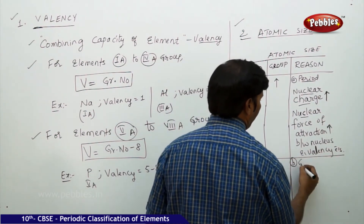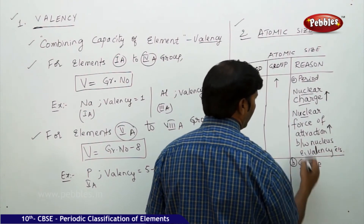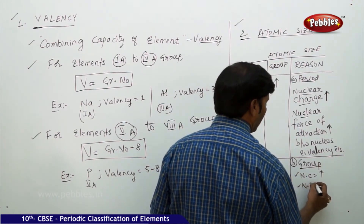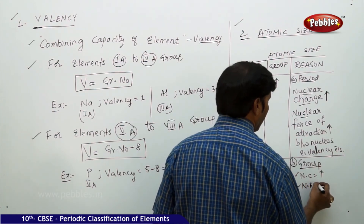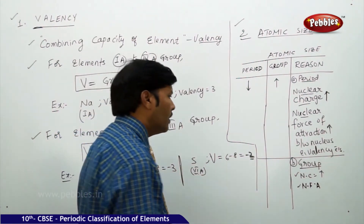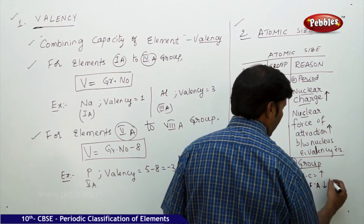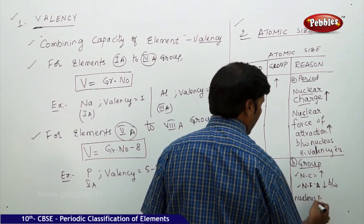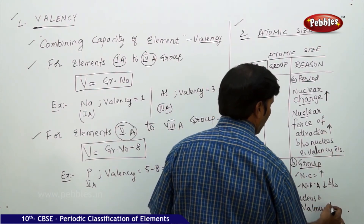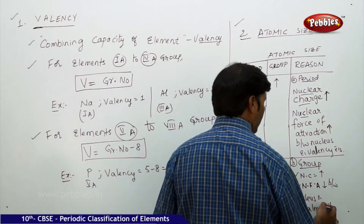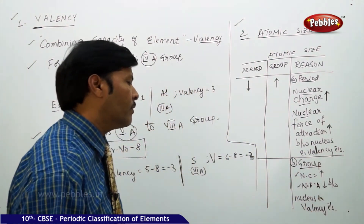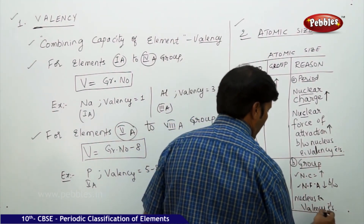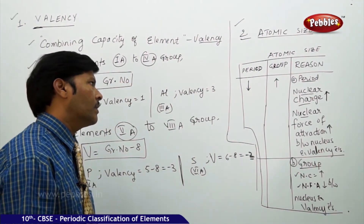In a group, the nuclear charge also increases, but the nuclear force of attraction decreases between the nucleus and the valency electrons. This is the reason the atomic radius increases in a group.